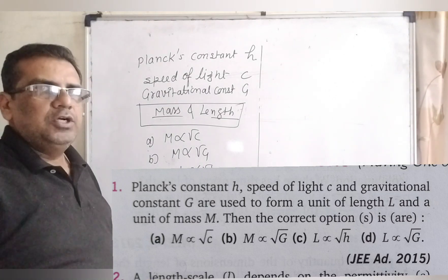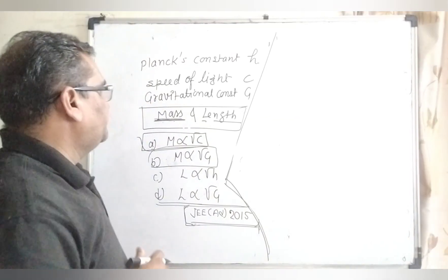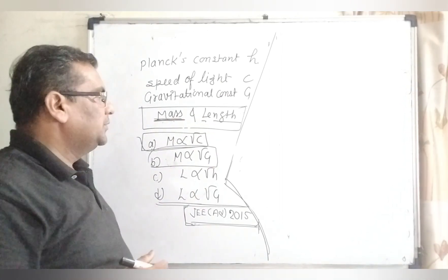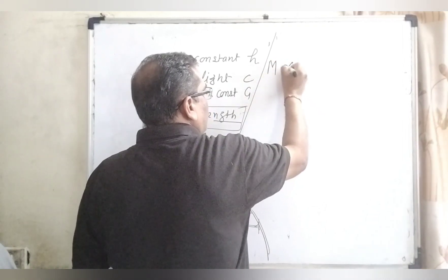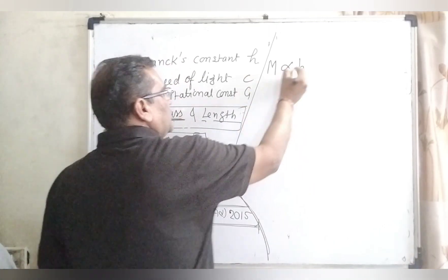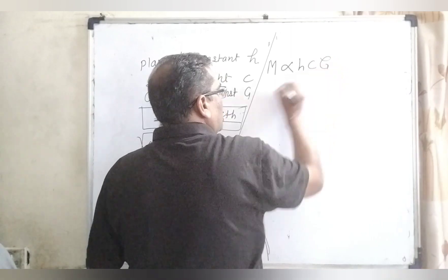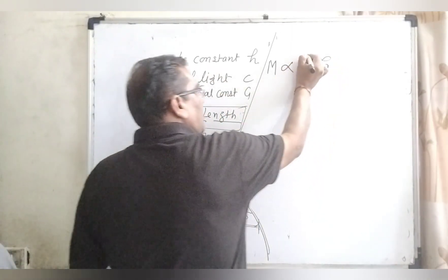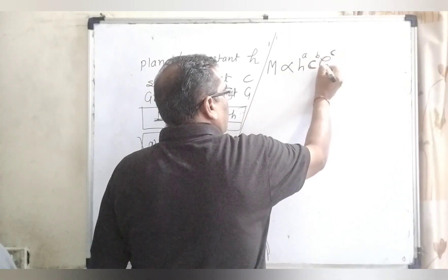This question is from JEE Advanced 2050. Now in this question, all three terms h, c, G are directly proportional to mass M and to length L. So let's write M as directly proportional to h raised to power A, c raised to power B, and G raised to power C, where A, B, C are the exponents.